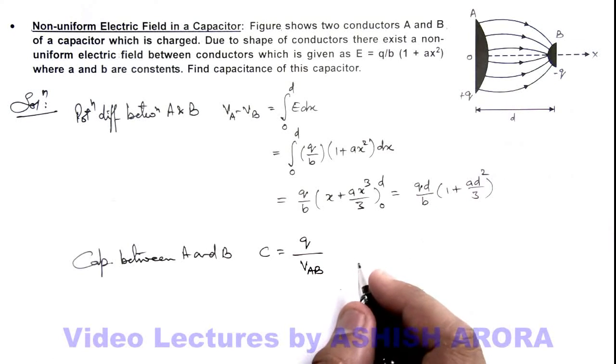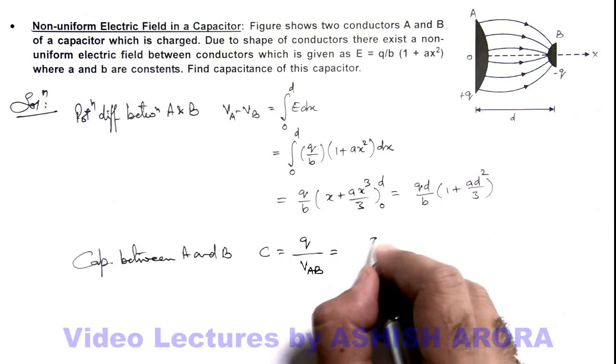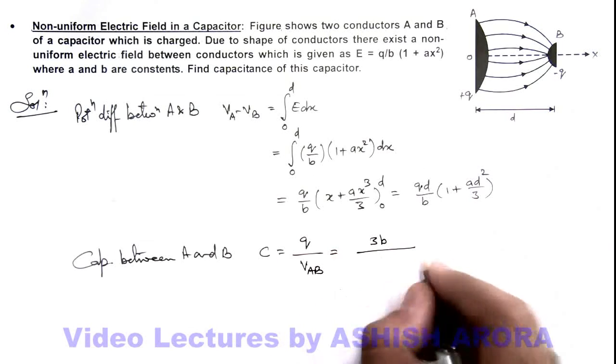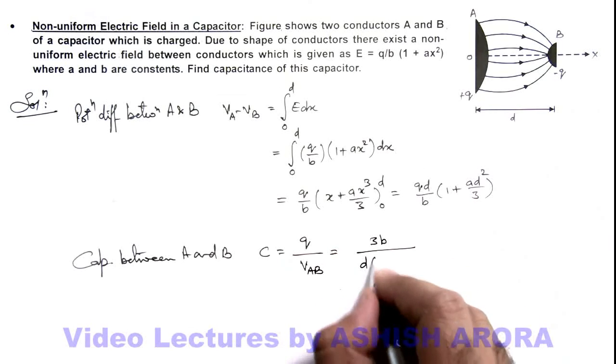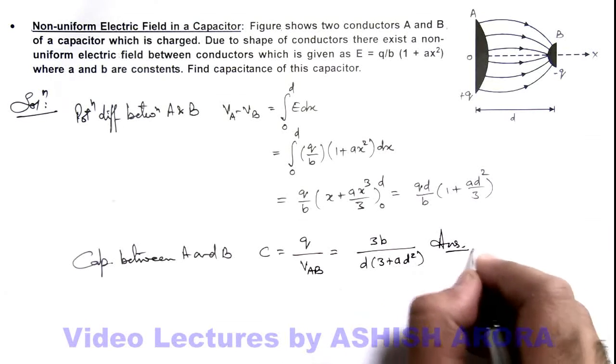of the capacitor plate divided by the potential difference across the two conductors of the capacitor. So on substituting here, q gets cancelled out. This will give us C = 3b/(d(3 + a·d²)). That is the result of this problem.